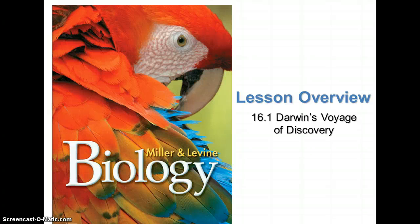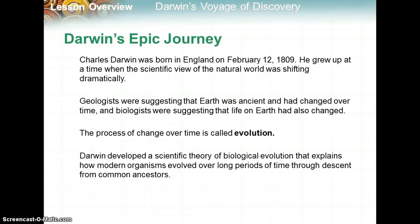We're going to be covering sections 16.1 and 16.2, some background history on Darwin. Charles Darwin was born in England in 1809 and grew up at a time when the scientific view of the natural world was shifting dramatically. Geologists were suggesting that Earth was ancient and had changed over time, and biologists were suggesting that life on Earth had also changed. This process of change over time is evolution. Darwin developed a scientific theory of biological evolution that explains how modern organisms evolved over long periods of time through descent from common ancestors.